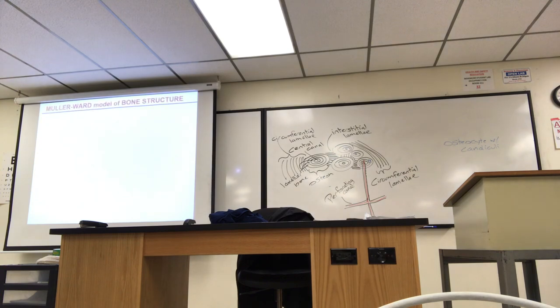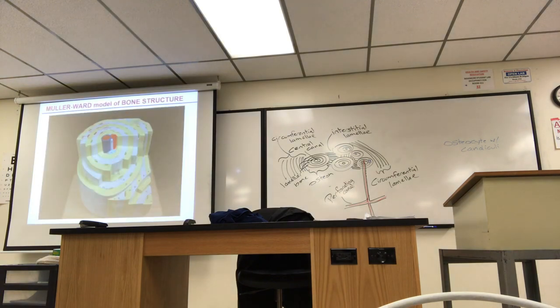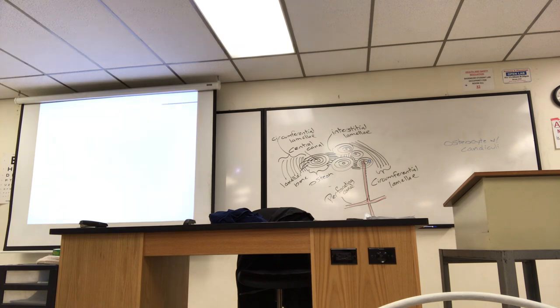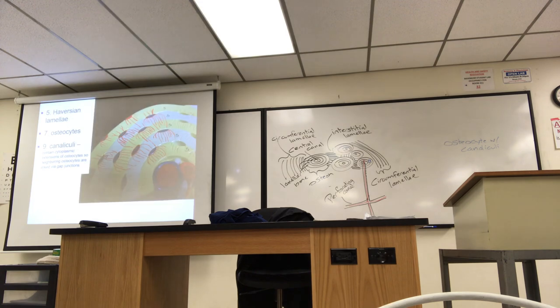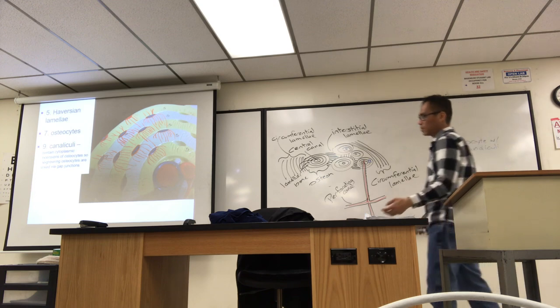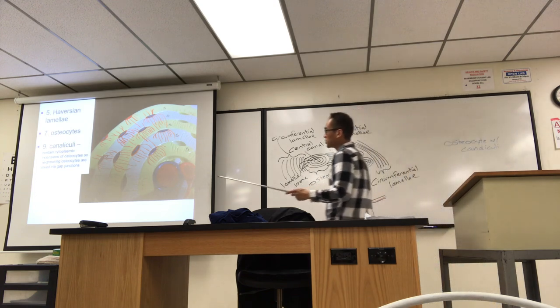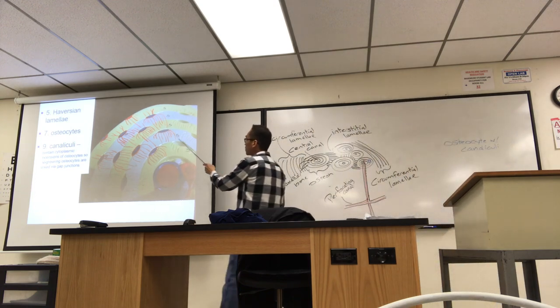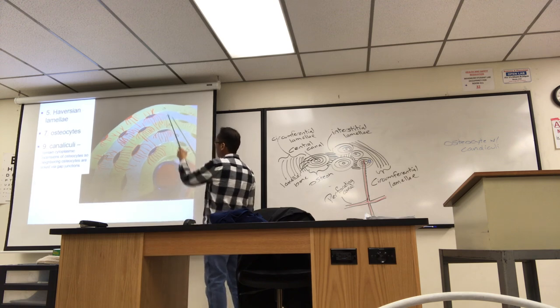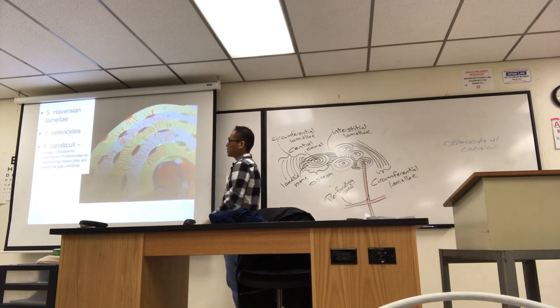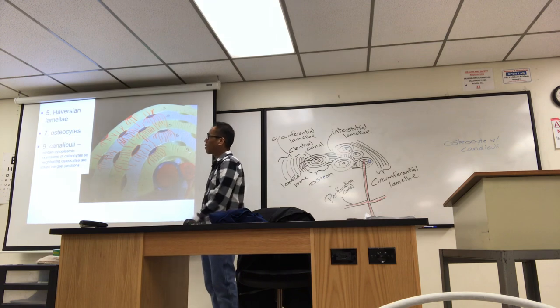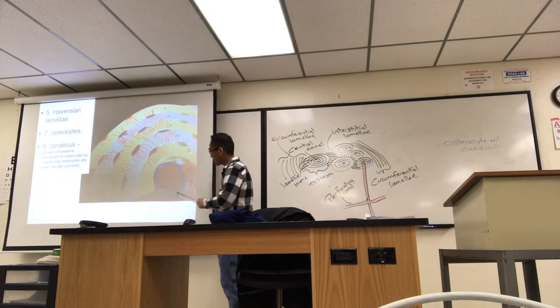We have another model of bone. It's called the Muller-Ward model. In this, they don't show you as much, so you get a little more detail there. They have their own labeling system, so I kind of look at it and call it what we refer to in lecture. All of these are five, but what do you think you're referring to? They make them different colors just so you can see how many layers there are. They call them Haversian lamella because they surround the central canal.